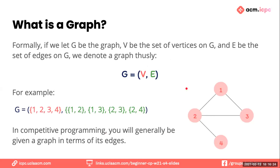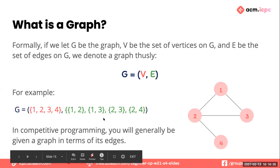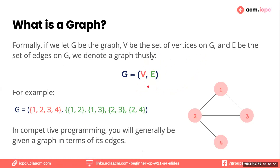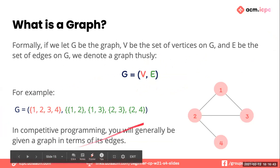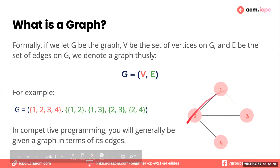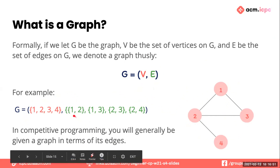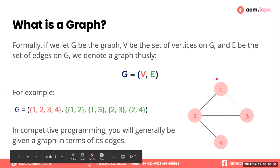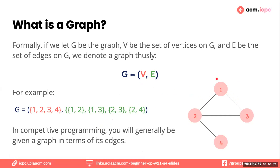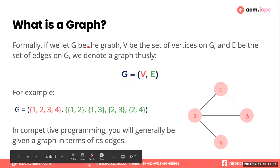Formally — this is the definition you'd see in Math 61 or CS 180 — if we let G be the graph, V be the set of vertices on G, and E be the set of edges on G, we denote a graph as G = (V, E). For example, we can see this graph with vertices one, two, three, and four, and edges between them such as one-two, one-three, et cetera. In competitive programming, you'll generally be given a graph in terms of its edges.